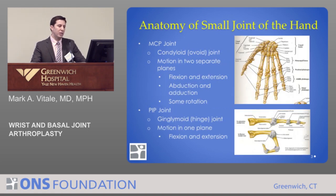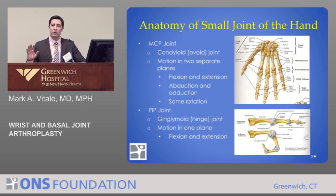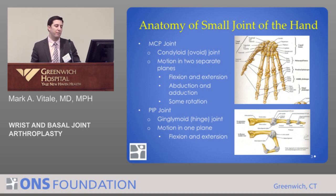Just some anatomy. The metacarpal phalangeal joint, or the MCP joint, is an ovoid joint. It allows motion in two planes — flexion and extension, and abduction and adduction. It also allows for some rotation.